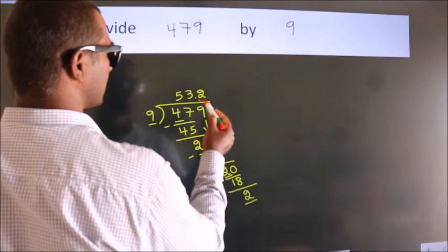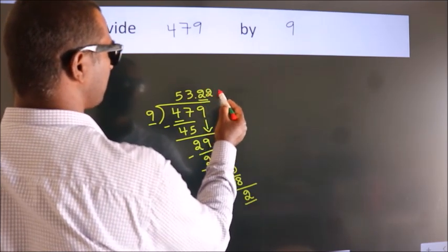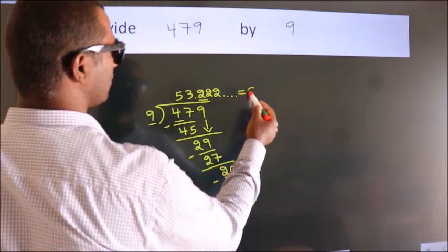That means, this number keeps on repeating. So, this is our quotient.